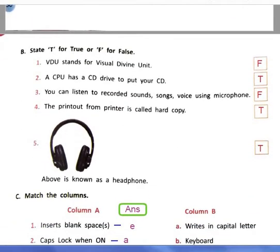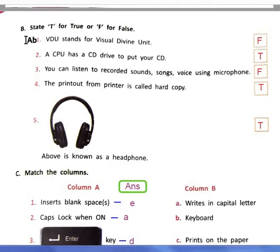Next exercise, Exercise B: state T for true or F for false. First, VDU stands for Visual Divine Unit - false. Second, a CPU has a CD drive to put your CD - true. Third, you can listen to recorded sounds, songs, voice using microphone.